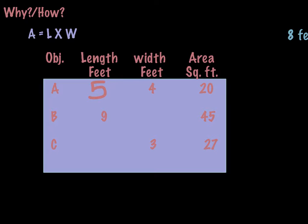Let's look at object B. This time I know that my length is 9 and I know the area is 45. So what is my width? Hopefully you came up with 5 again — because 5 times 9 is equal to 45.